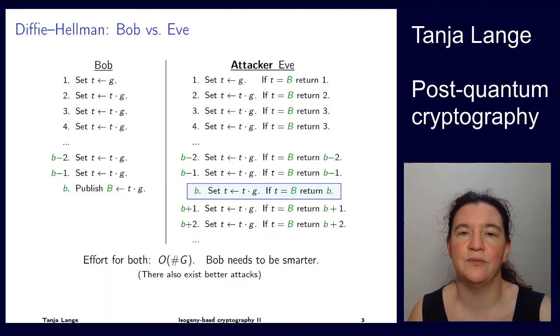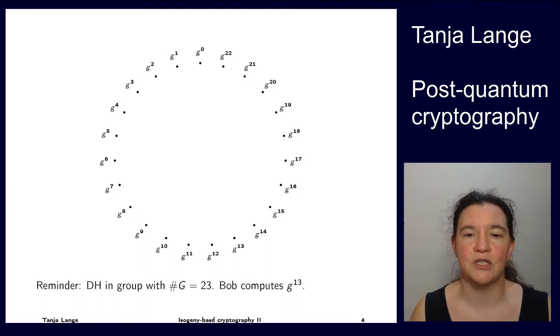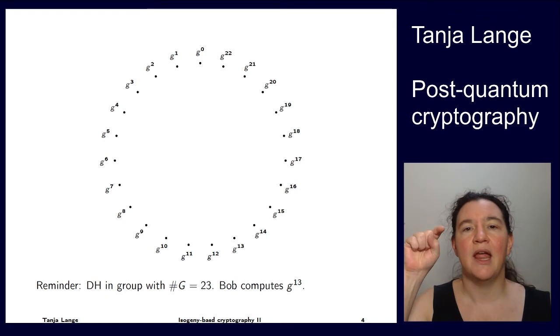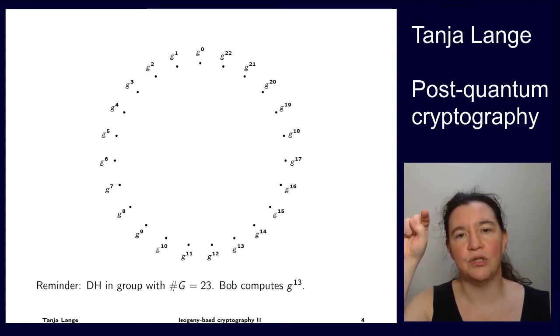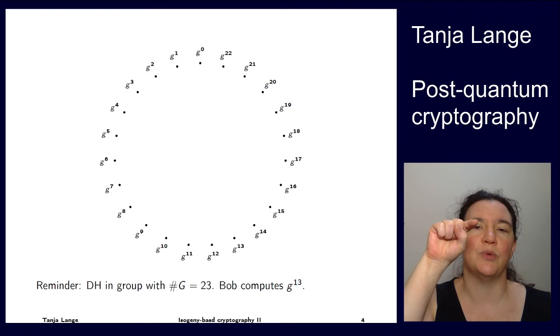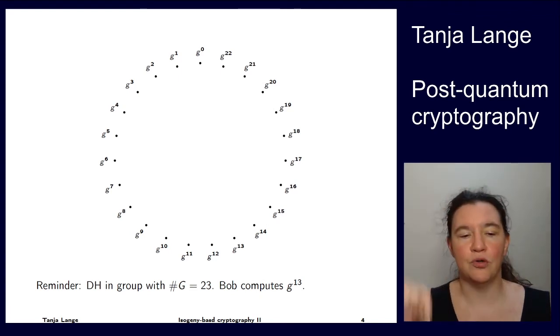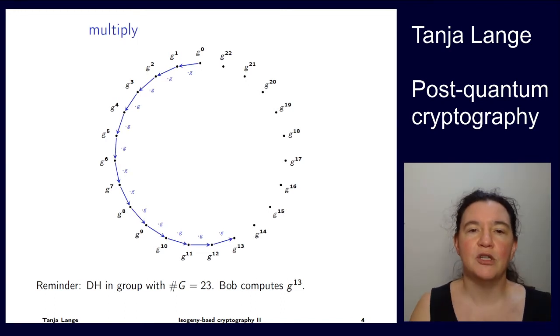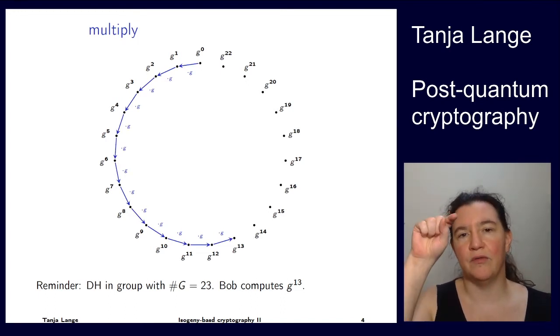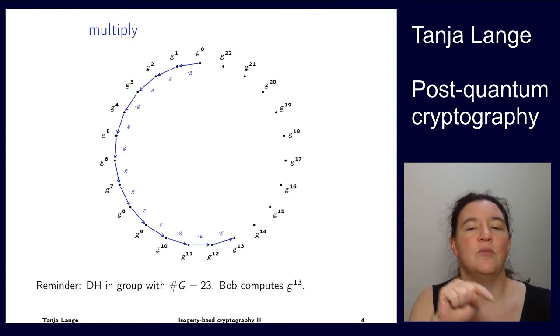So let's visualize this with an example. So here we have a group of just 23 elements, starting with the identity element G to the 0 up there, and then going G to the 1, G to the 2, and so on around the circle, till it gets back to G to the 22, and the order being 23, so G to the 23 is the same as 0. So these are all the group elements, and what we've been seeing on the page before is multiply for each step. So we're going from G, from 1 to G, to G squared, and so on, until we get, let's say, Bob picked 13, so we get to G to the 13 here.